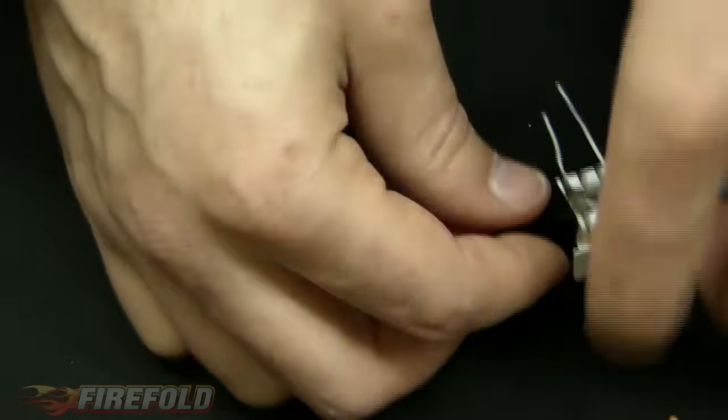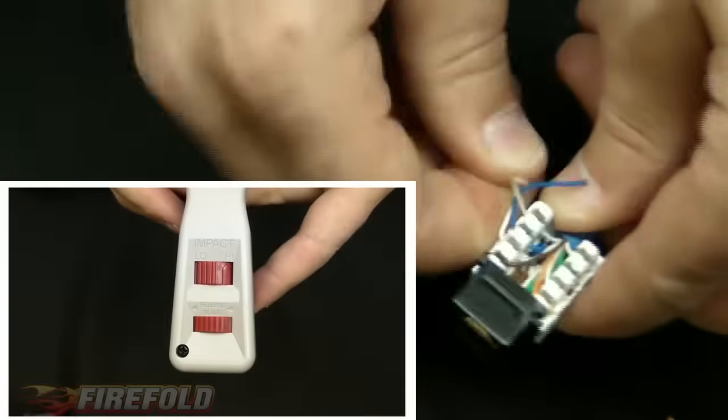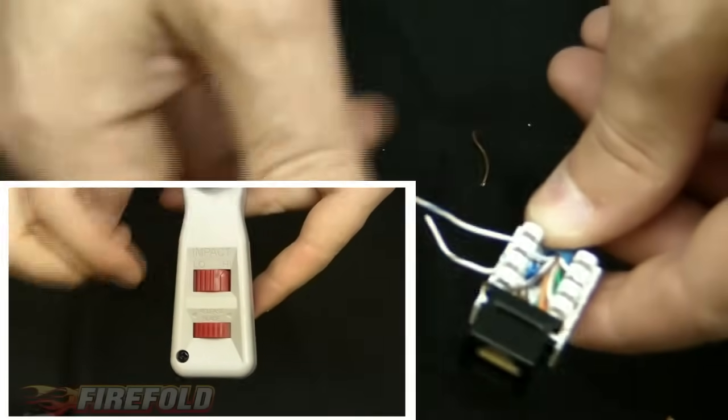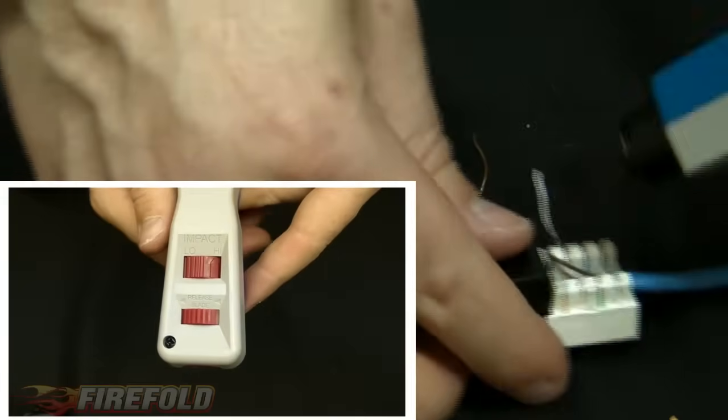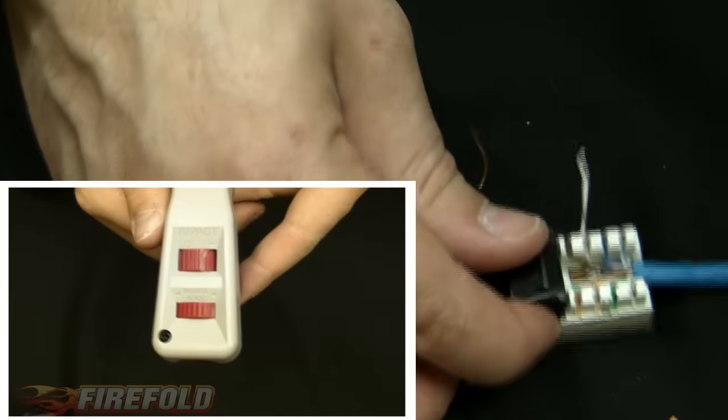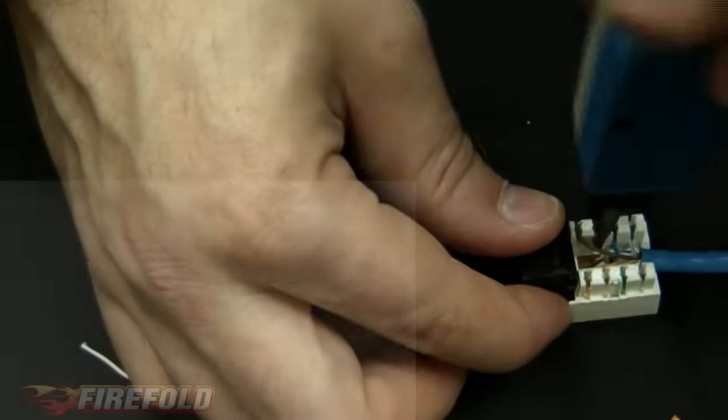One last thing I'd like to mention on your punch down tool here. You'll see you have low impact and high impact. It's a lot easier to have it on the high impact, so that way you don't have to punch it down more than once or twice. Sometimes you've got to give them an extra little punch down because they don't want to come loose.